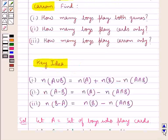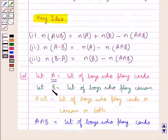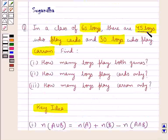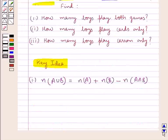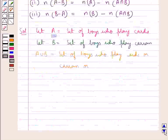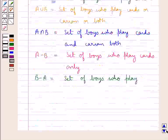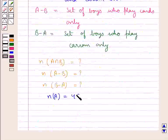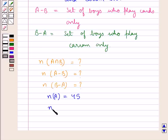We have considered A to be the set of boys who play cards and B to be the set of boys who play carom. In the question, 45 boys play cards and 30 boys play carom. So the number of elements in set A is 45 and the number of elements in set B is 30.